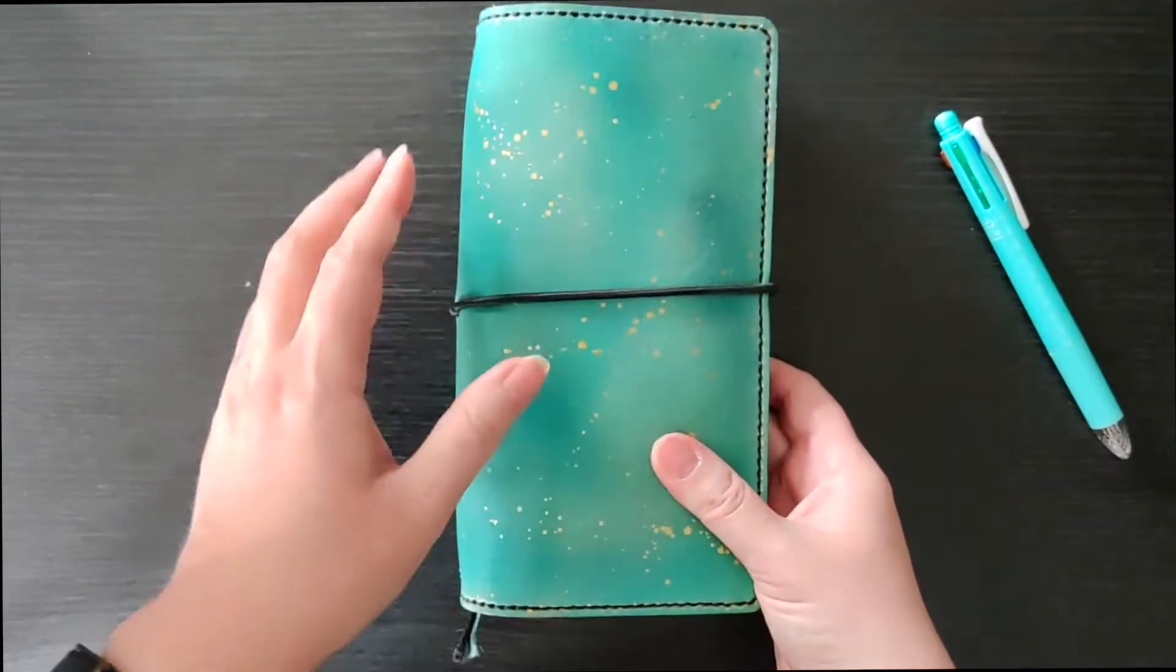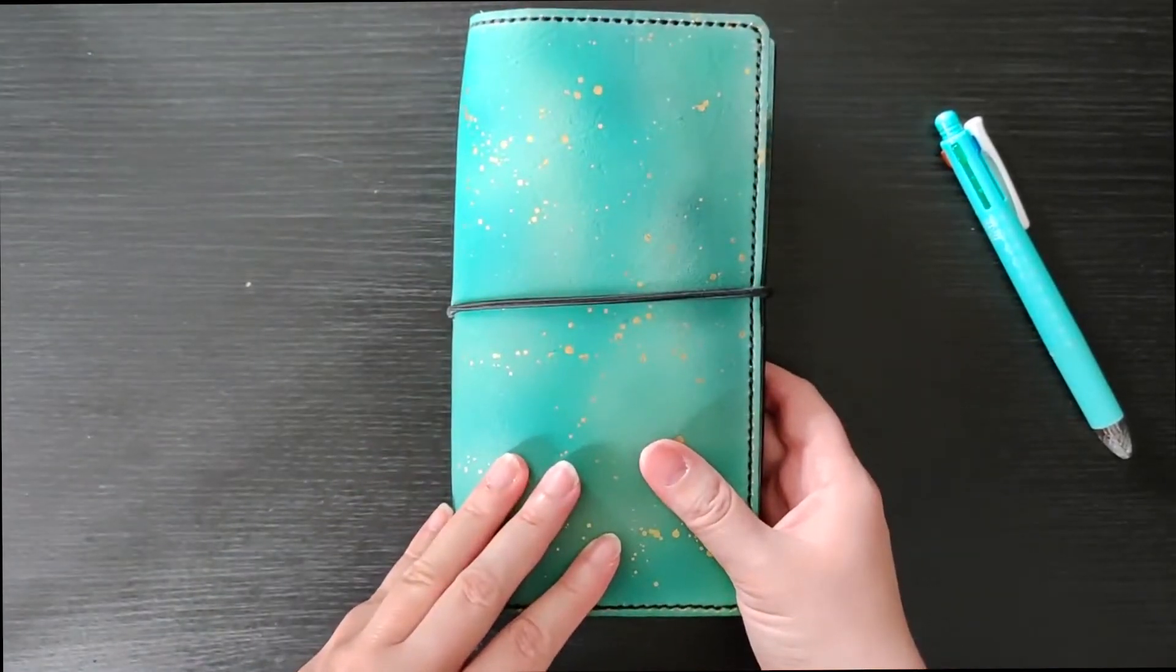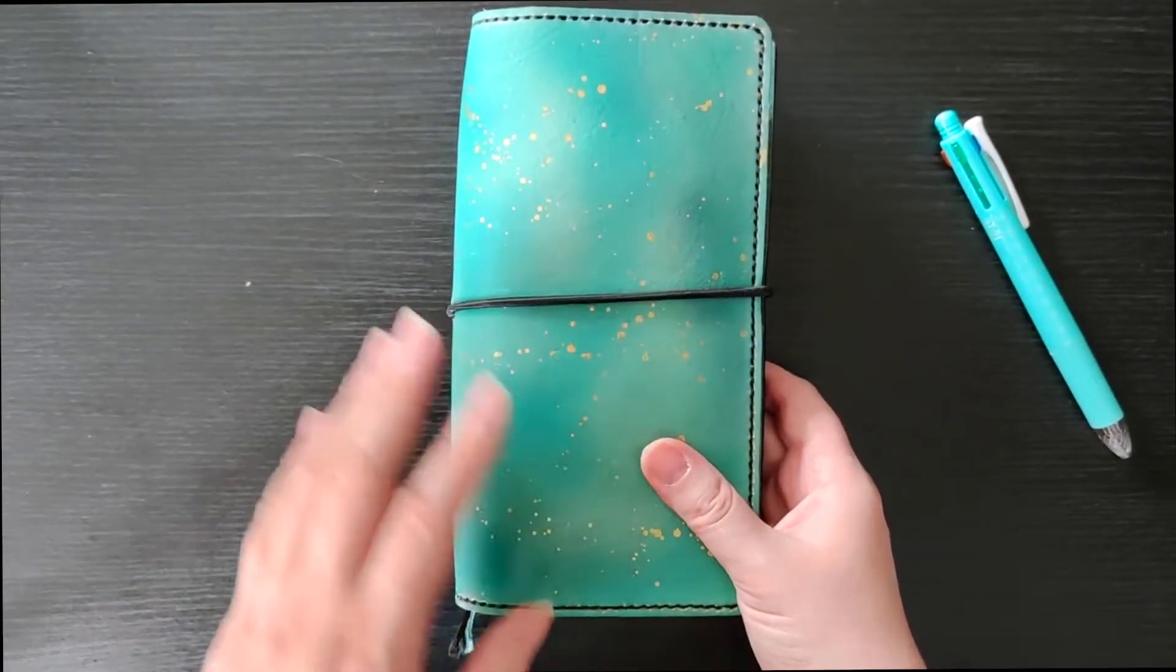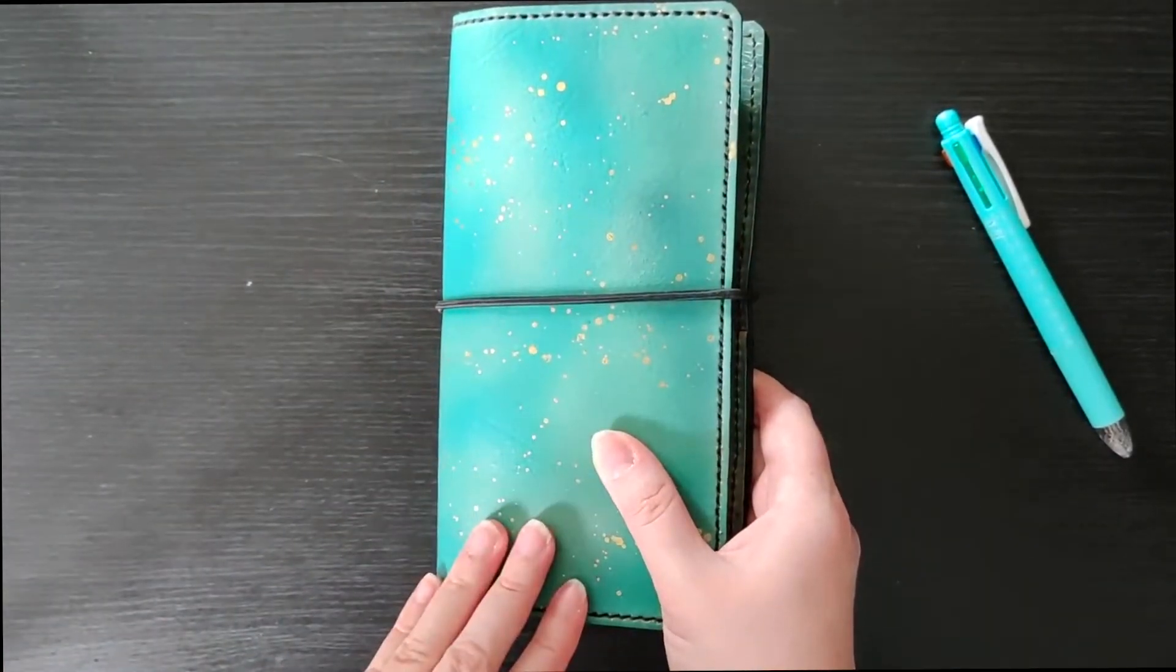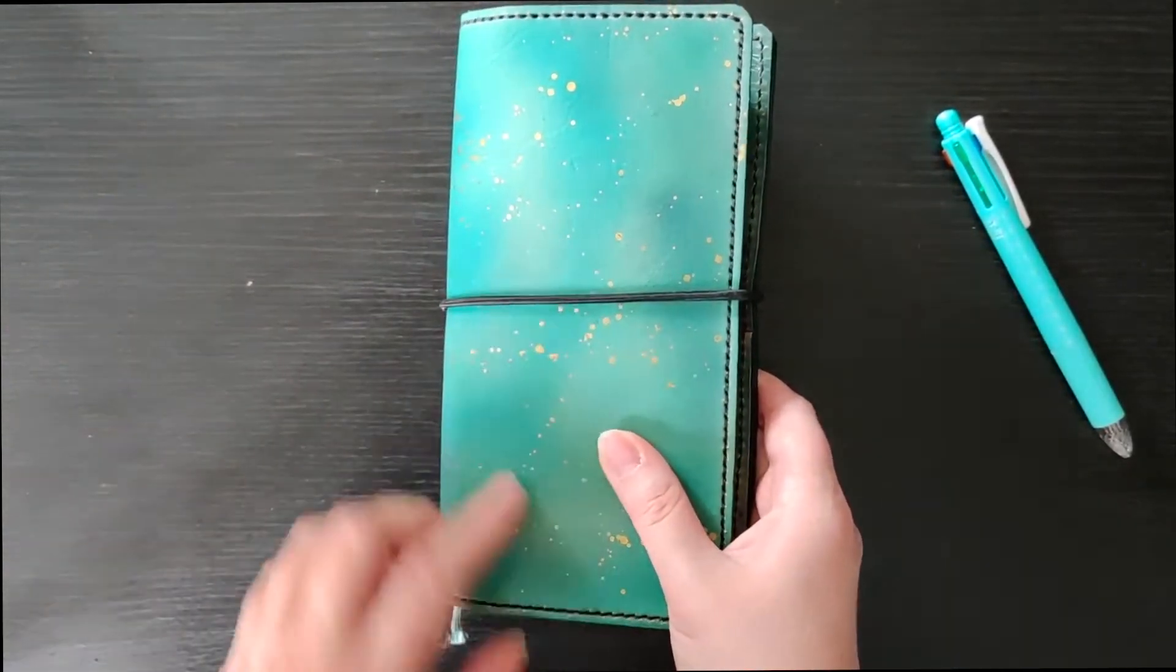So my journal planner cover is custom made from Lewis and Louisa and this was custom made for me in this really lovely green galaxy style with gold splatters on there.